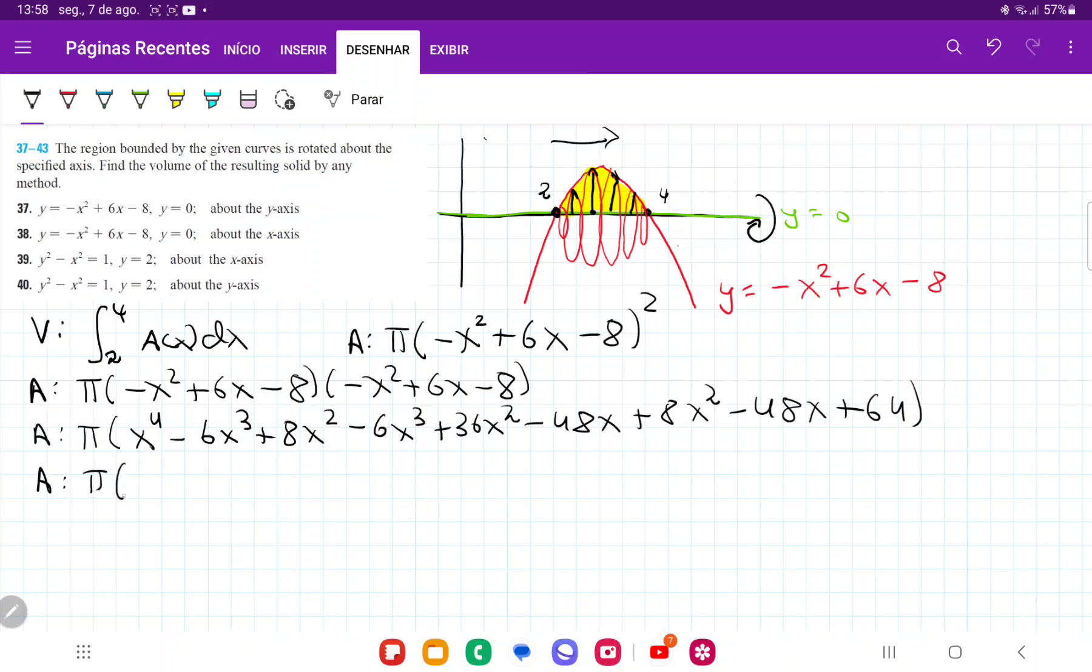So what we're going to do now is we're going to collect like terms. I only have a single x⁴. For x³, I have -6 and -6. So I'm going to highlight so that you guys can follow. I've dealt with this, and then I'm going to have -6x³ - 6x³, so -12x³. And then the x² terms, I'm going to have 8 + 8 + 36. So that gives me plus 52x². The single x, I'm going to have -48 - 48. So that is -96x. And lastly, we're going to have plus 64. All right, so that's the expression that we have. And remember that this is just going to give us the expression of the area of the circle.